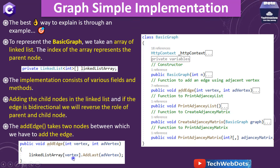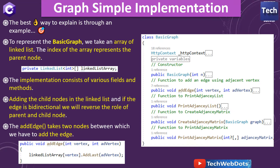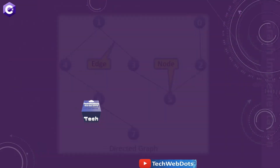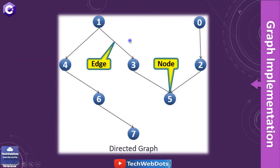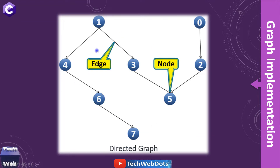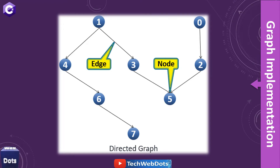It means there will be an edge between these two nodes. We use the index of the linked list array and call AddLast, which is a method of linked list. The graph I am going to implement today has eight nodes — 0, 1, 2, 3, 4, 5, 6, 7 — and this is an unweighted directed graph.